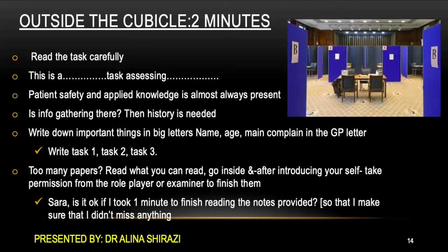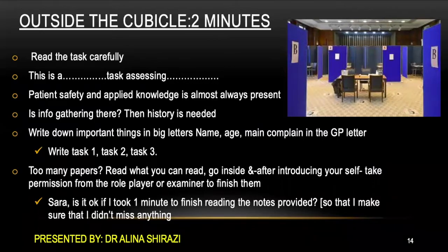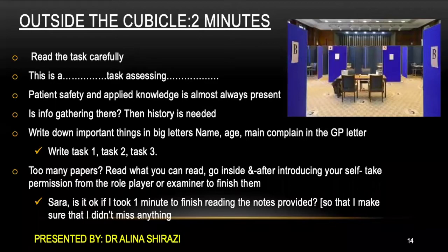You will have a pen and paper provided before you enter the examination room. Write the important things in big letters: the patient's name, age, and main complaint from the GP letter. Write task steps: number 1 — history taking, number 2 — investigation and examination, number 3 — management plan. If there is too much to read, go inside and after introducing yourself, take permission from the role player to finish reading: 'Sarah, is it okay if I took one minute to finish reading the notes so I can make sure I didn't miss anything?' This builds rapport with your role player and impresses the examiner.